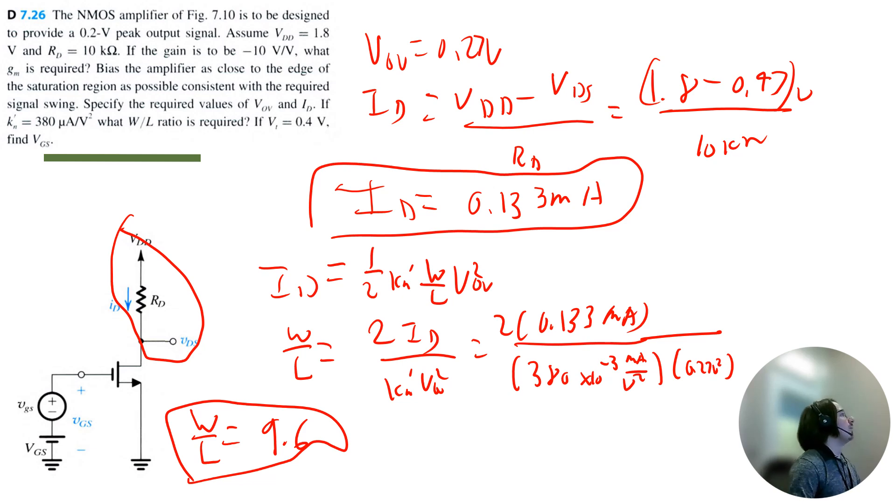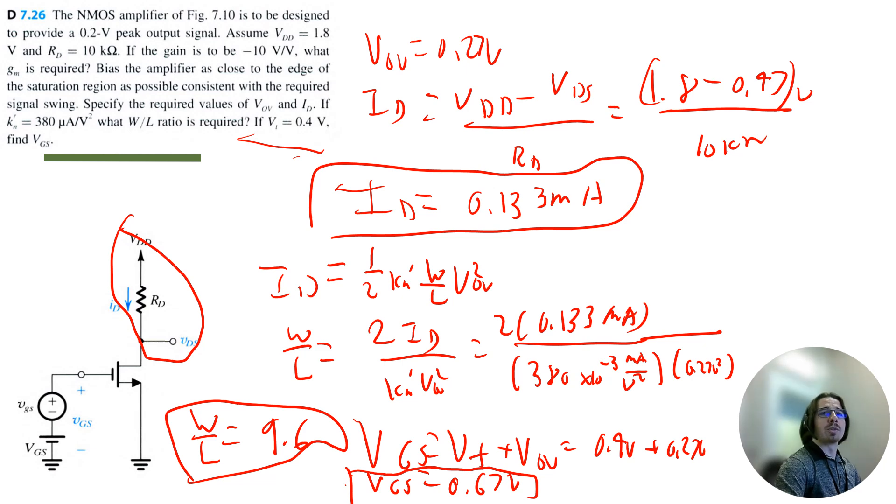And I also got one question left. If Vt equals 0.4 volts, find Vgs. Vgs is simply equal to Vt plus V overdrive. So that's 0.4 volts plus 0.27 volts. So I get that Vgs is equal to 0.67 volts. And that solves the rest of the question.